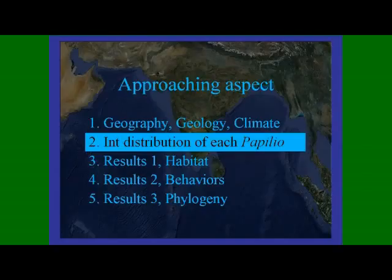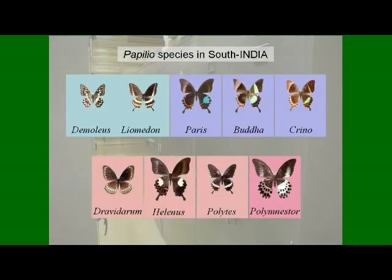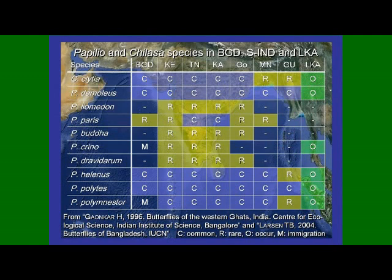In this section, we introduce the international distributions of our target species and the major studies that have been made on them. Nine Papilio species occur in our research area. In this presentation, we separate these species into four groups based on the colour pattern of their wings. The geographic distributions of these species in the India region has previously been studied by Kaonka and Larsen, and these distributions are shown in this table. All nine Papilio species occur in and around the Western Ghatt Mountains. Now we will show you the international distributions of these species.